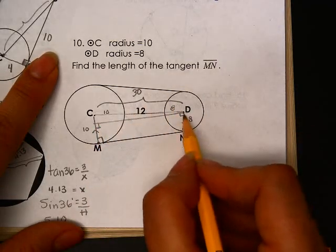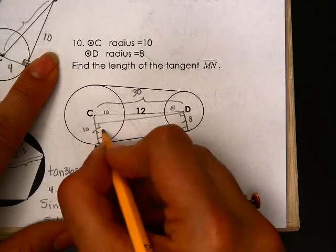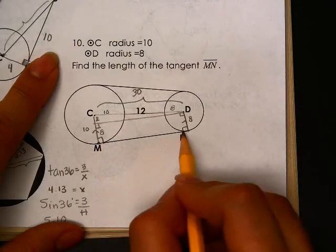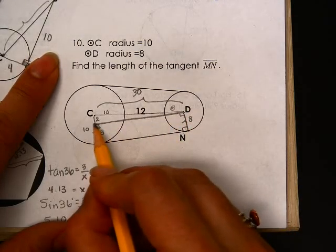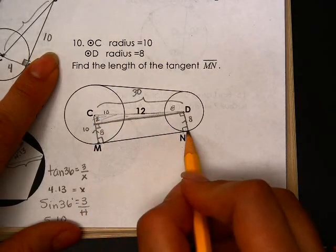Now, if this is 8, and I just drew this in nice perpendicular here, then that means that this is 8 here and this is 2. And if you notice, MN is equal to this length from here to here. So if I can solve for this length in this nice little right triangle here, I can also solve for that one.